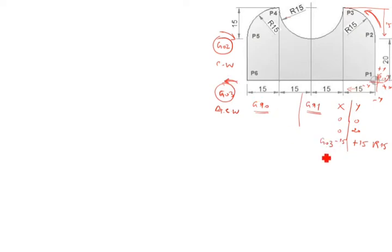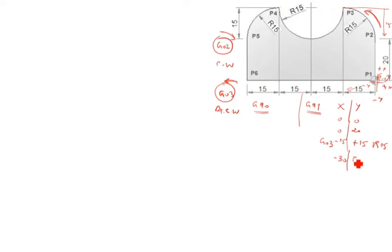After P3 finished, you go from P3 to P4. What is X value? Starting P3 to P4: 15 plus 15 is 30, so minus 30 for X value. What is Y value? Y value is 0. The arrow goes this way, it comes this way — so Z02. Up to P4 we finished.